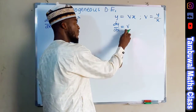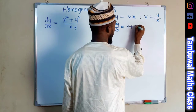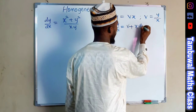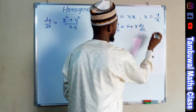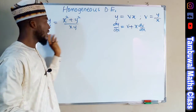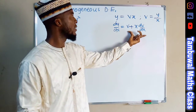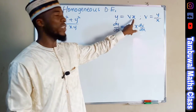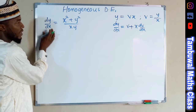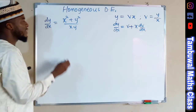Using the product rule: keep the first term constant, differentiate x to obtain 1, multiplied by v — giving v — plus the second term constant times the derivative of the first, giving dv over dx. So dy over dx is replaced with v plus x dv over dx.